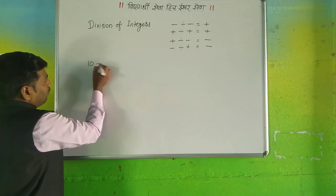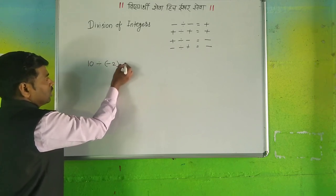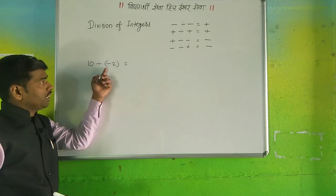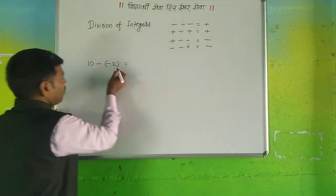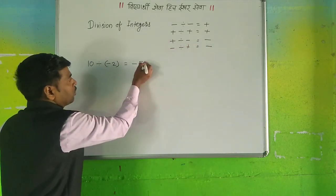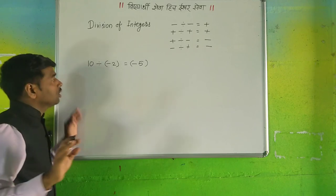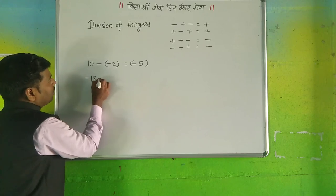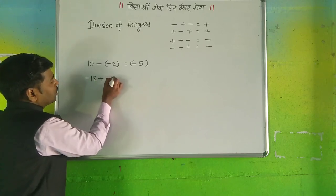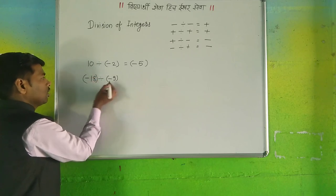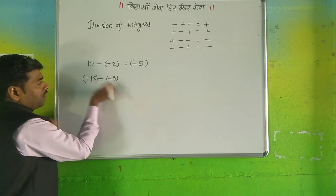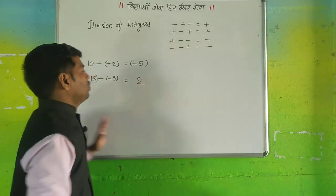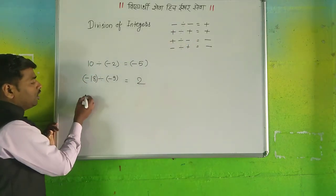Let's look at example one: 10 divided by minus 2. Here we have one positive and one negative, so the answer will be negative. 2 times 5 is 10, so the answer is minus 5. Second example: minus 18 divided by minus 9. 9 times 2 is 18, and the sign is minus divided by minus, which gives positive, so the answer is positive 2.